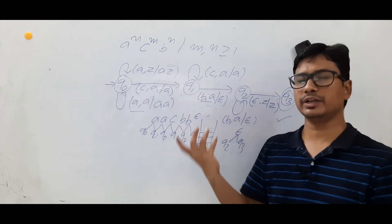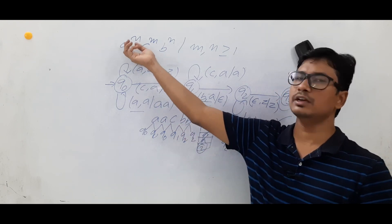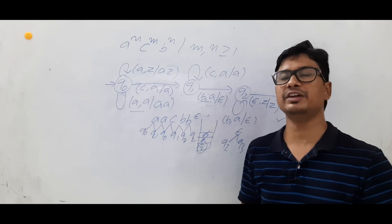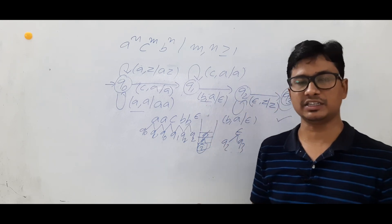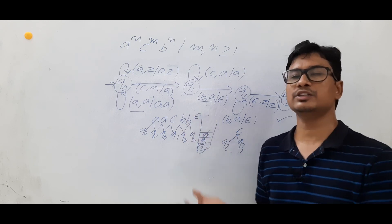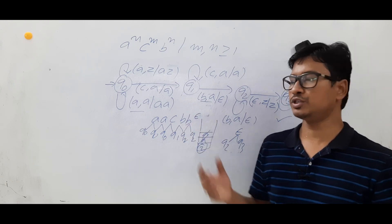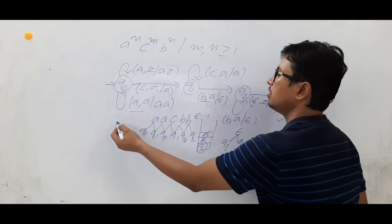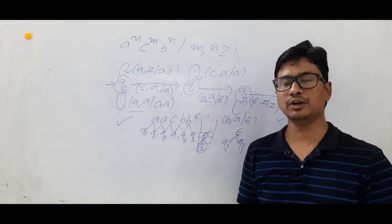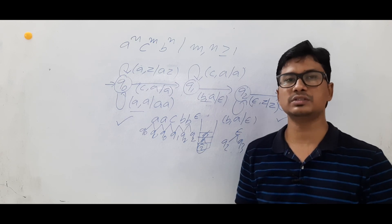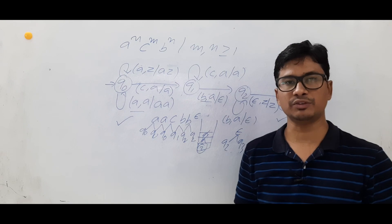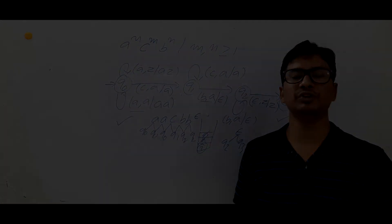You can also take a counter-example — a string that does not belong to this language — and verify that it will not reach the final state, confirming it is not accepted by the pushdown automata. So for this given language, this is the correct pushdown automata. If you have any doubts, feel free to ask in the comment section; I will clear your doubts in less than 24 hours. Thank you for watching.